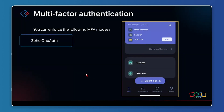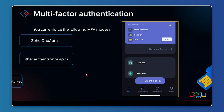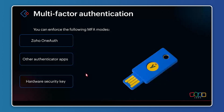For multi-factor authentication, we have the Zoho OneAuth application — downloadable from the Play Store — which offers passwordless sign-in, face ID, QR code scanning, or OTP. With OTP enabled as the second-level verification, it asks you to enter an OTP viewable in the application. You can also view devices, sessions, and other information in the app. Third-party authenticator applications are also supported.